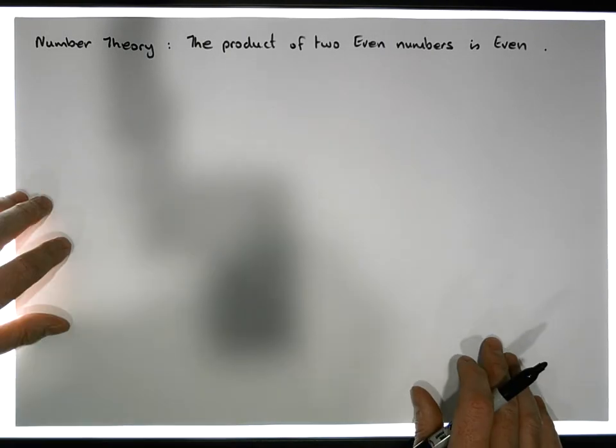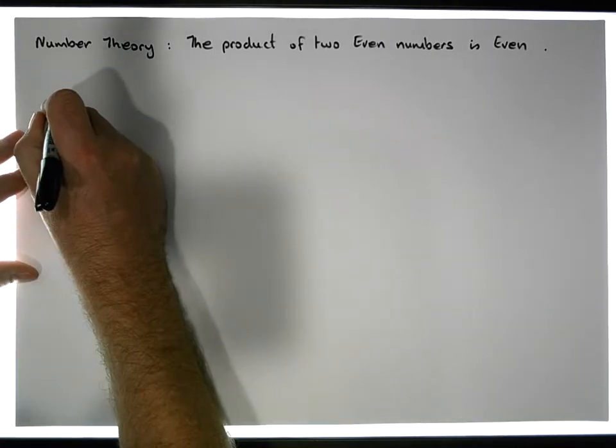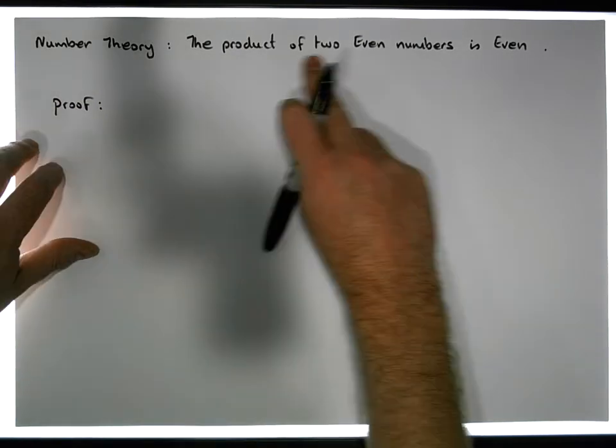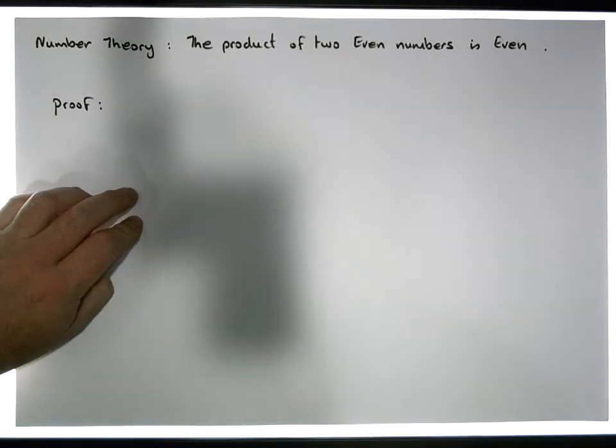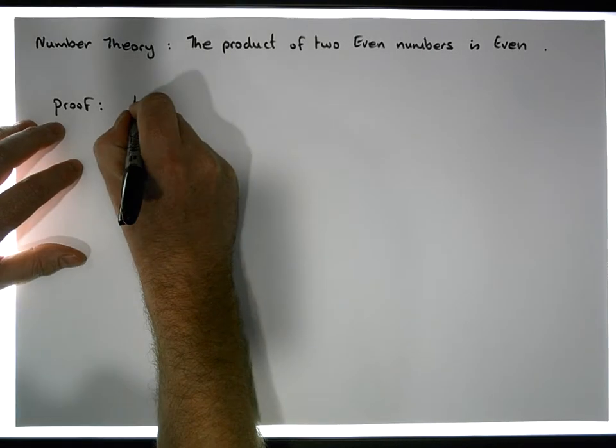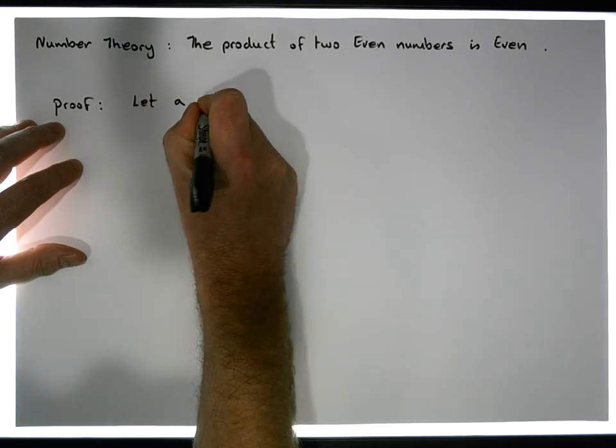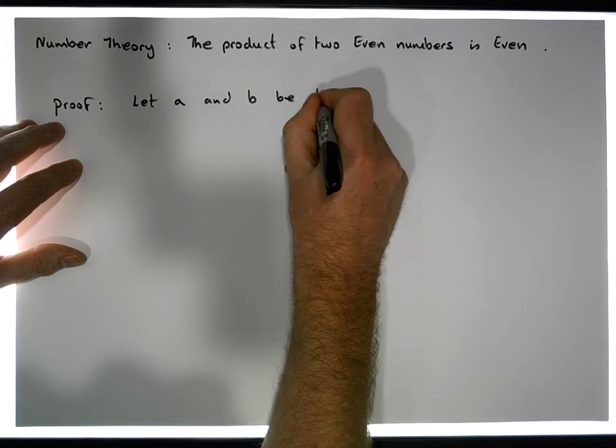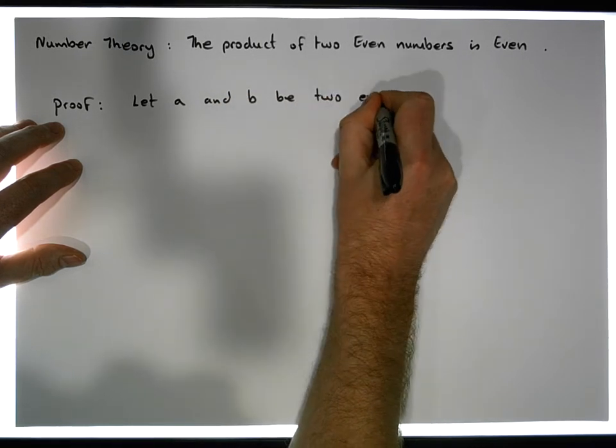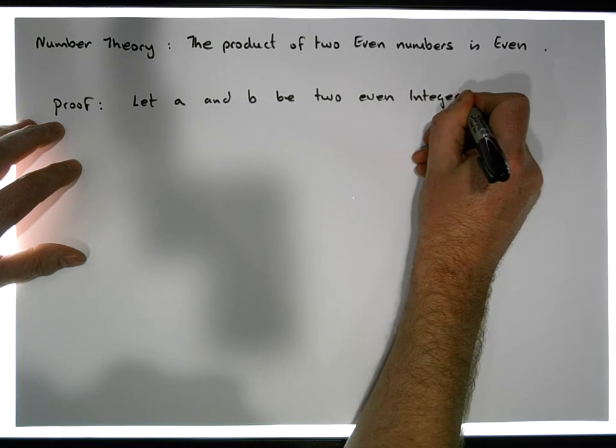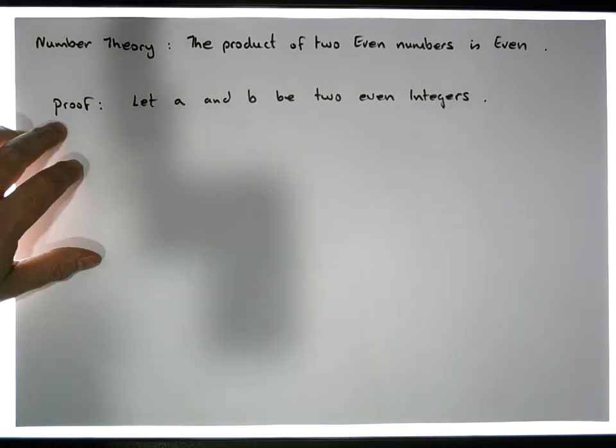To do this particular proof, let's start off. If I want to calculate the product of two even numbers, I need to have the two even numbers in the first place to begin with. Let's assume that we have them. Let A and B be two even integers. That's important - we're dealing with integers here.